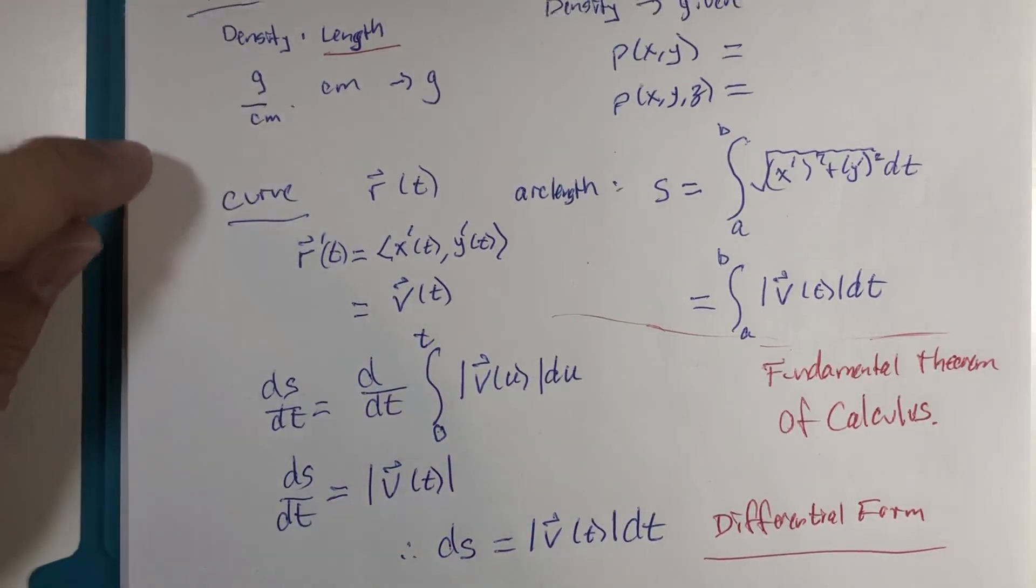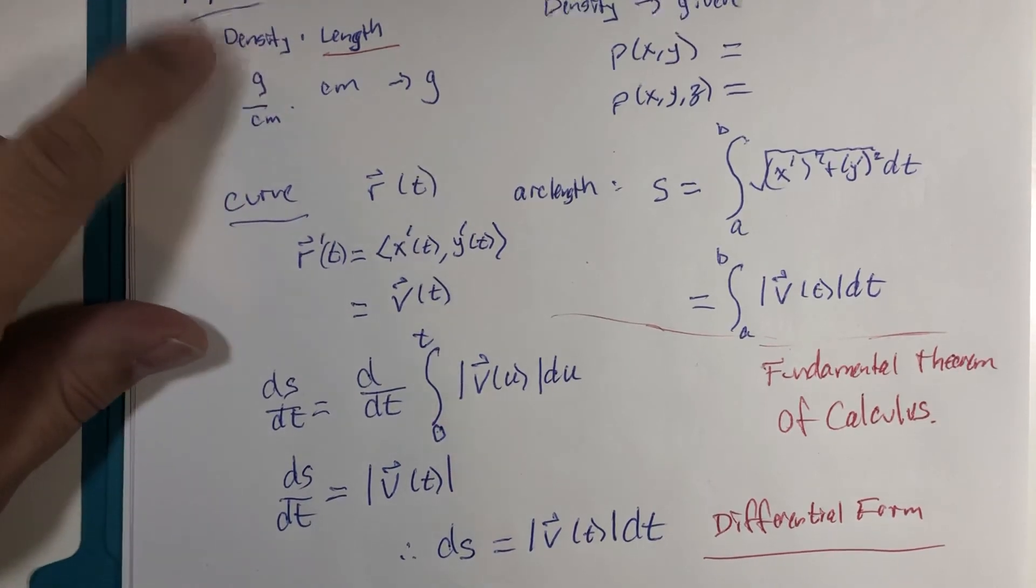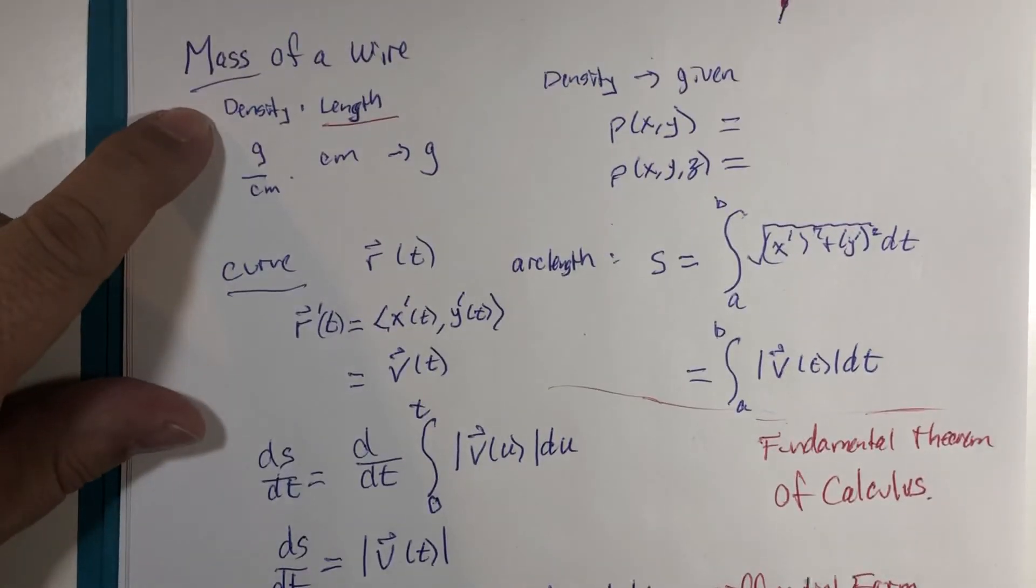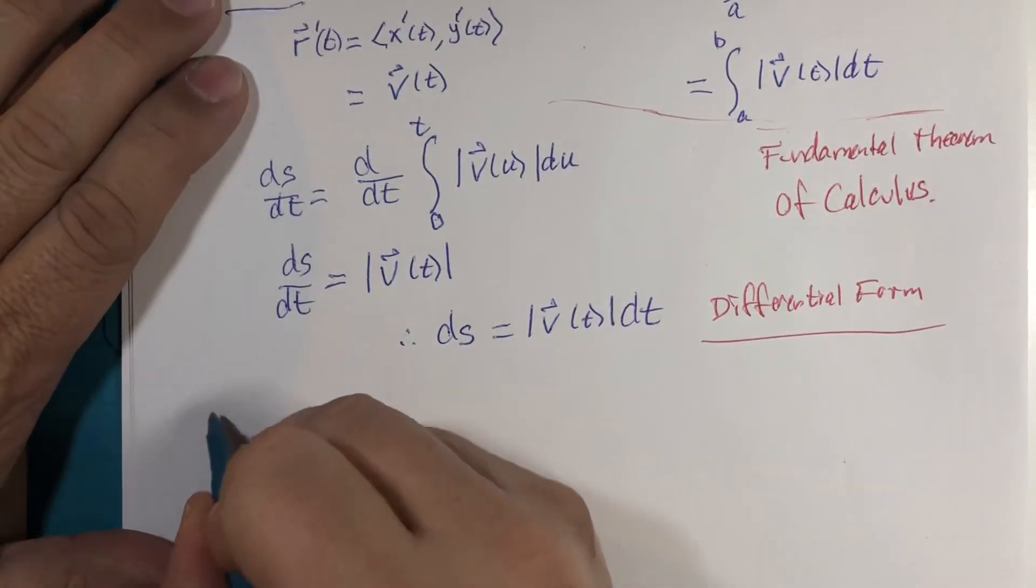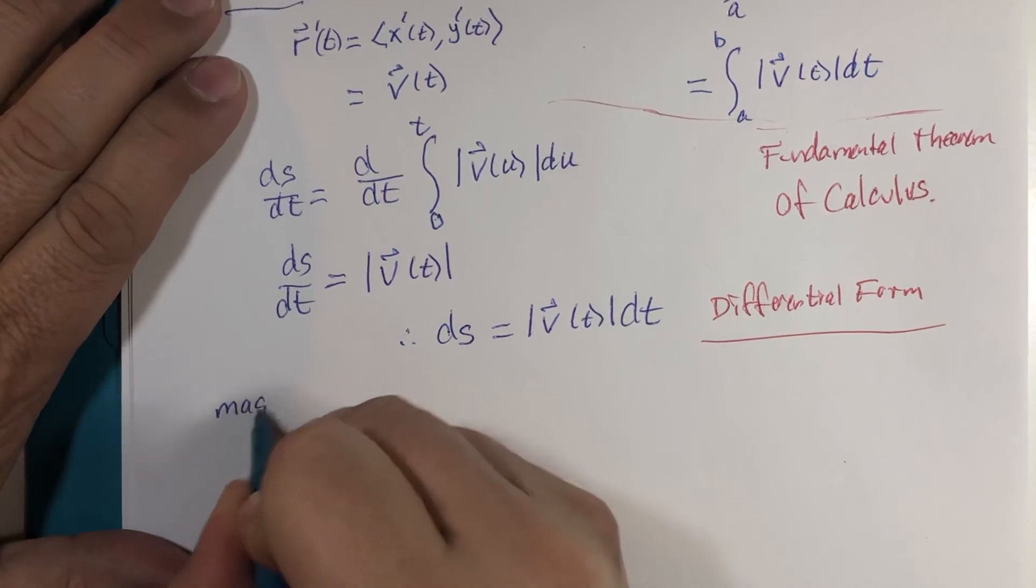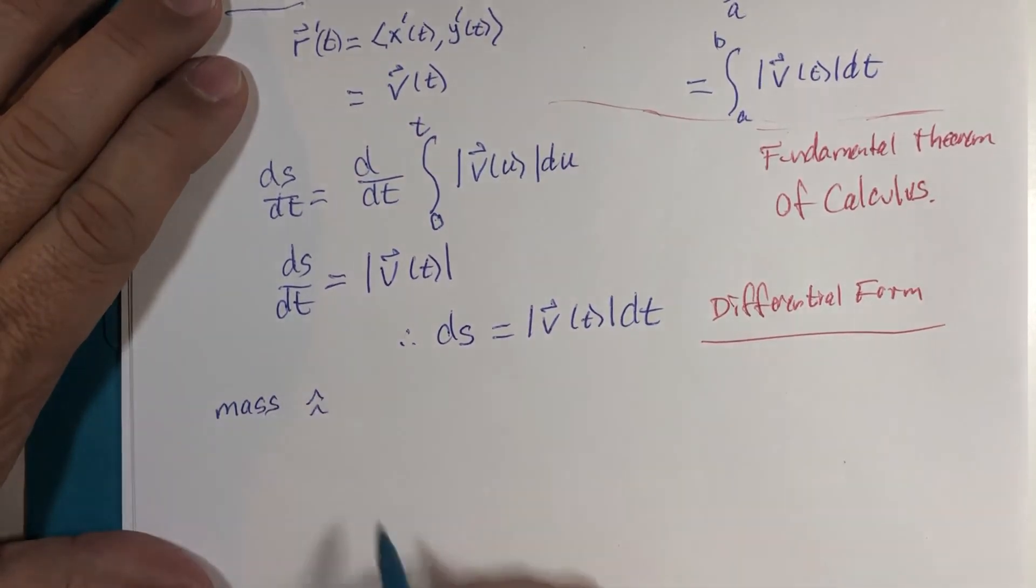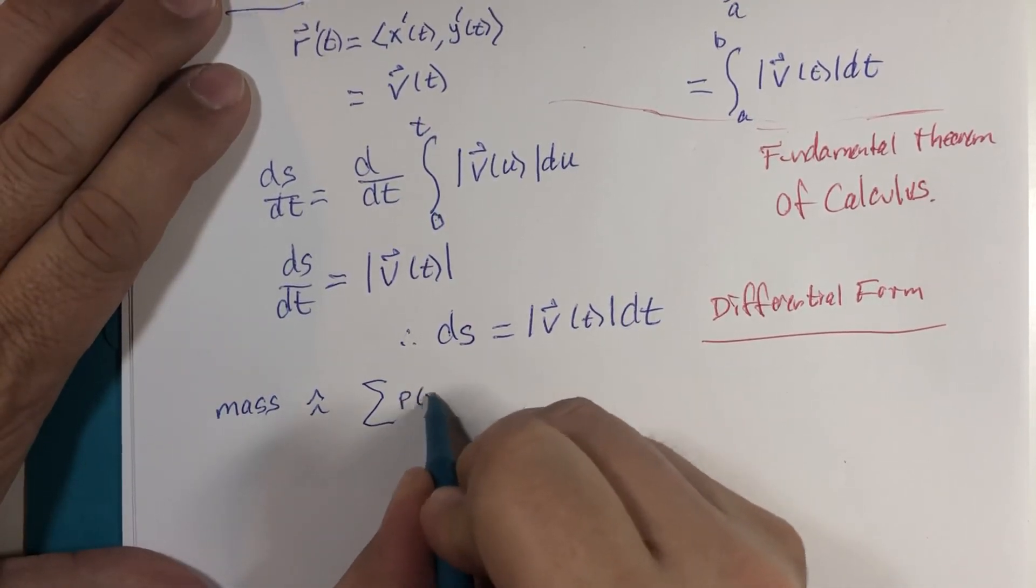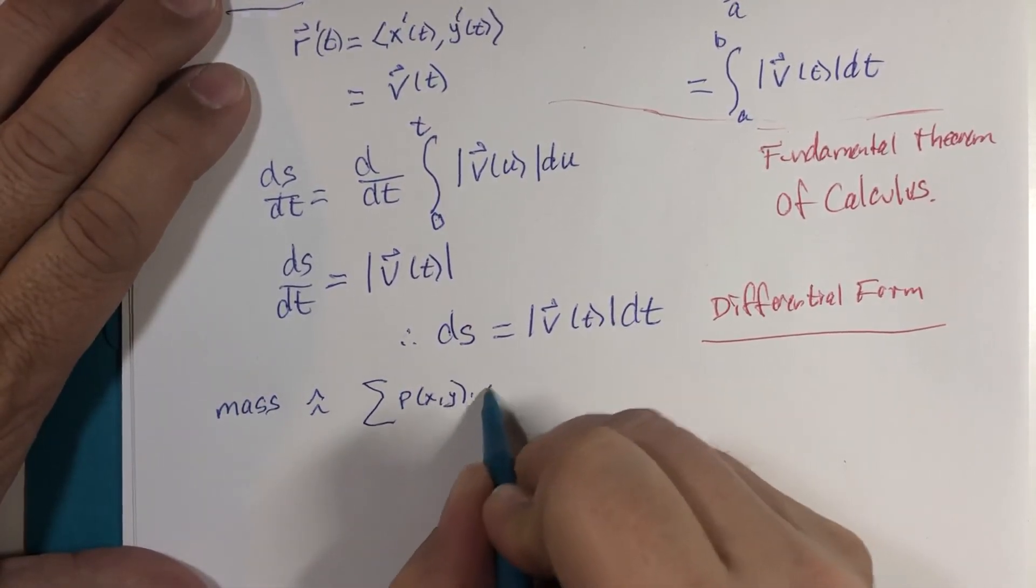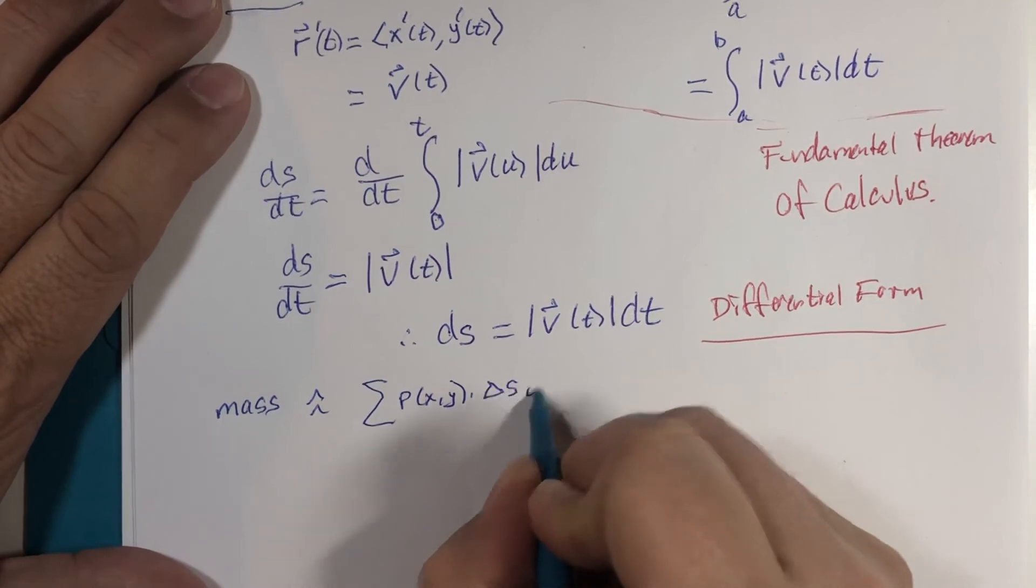This takes you back to the question: how do we find the mass of the wire? How do we do it? Well, mass is approximately equal to the sum of all of these densities multiplied by delta s values.